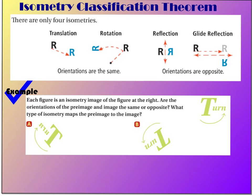In the first example, we have the word 'turn' with an arrow underneath it. If I look at example A, can I still read the word 'turn' as normal? No, I can't — so my orientation has changed. If orientation changes, it cannot be a translation or rotation; it must be a glide reflection or reflection. Because I've not only changed the orientation but also rotated it a bit, that means I must have also translated, so this is a glide reflection. In example B, you can still read the word — you just have to turn your head — so the orientation is the same. It's not a translation because the object would look exactly the same just dragged to another spot, so this must be a rotation.